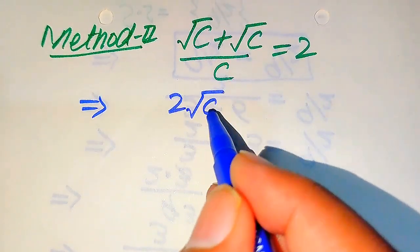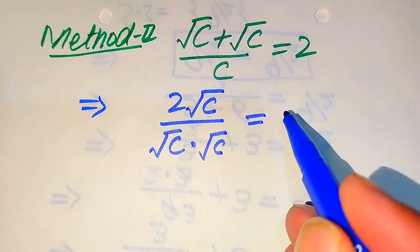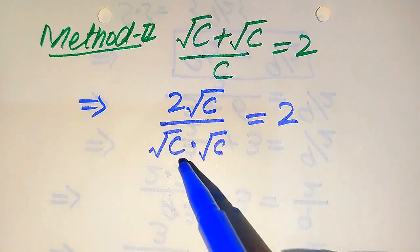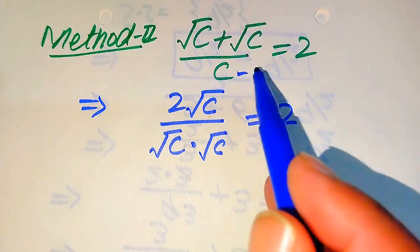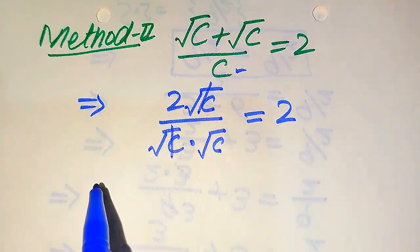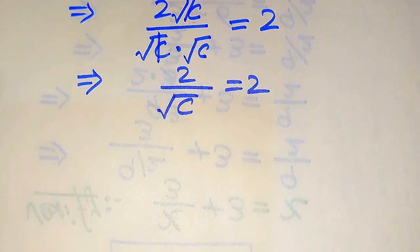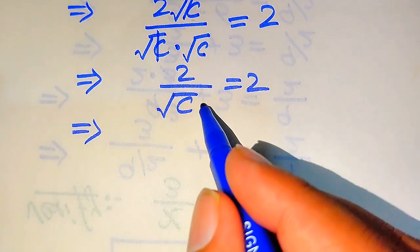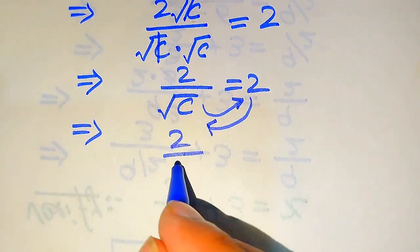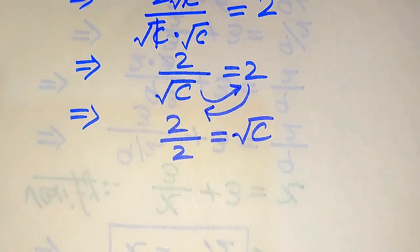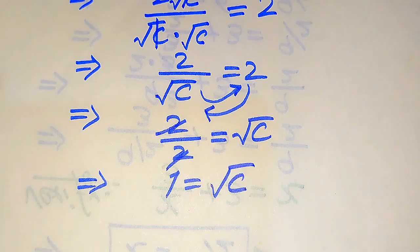In the numerator, square root of C plus square root of C becomes 2 times square root of C. We also write C as square root of C times square root of C in the denominator, since any number can be written as a product of its square roots. The square root of C in the numerator cancels with one square root of C in the denominator, giving 2 divided by square root of C equals 2. We then move square root of C to the right and 2 to the left, getting 2 divided by 2 equals square root of C, so 1 equals square root of C.